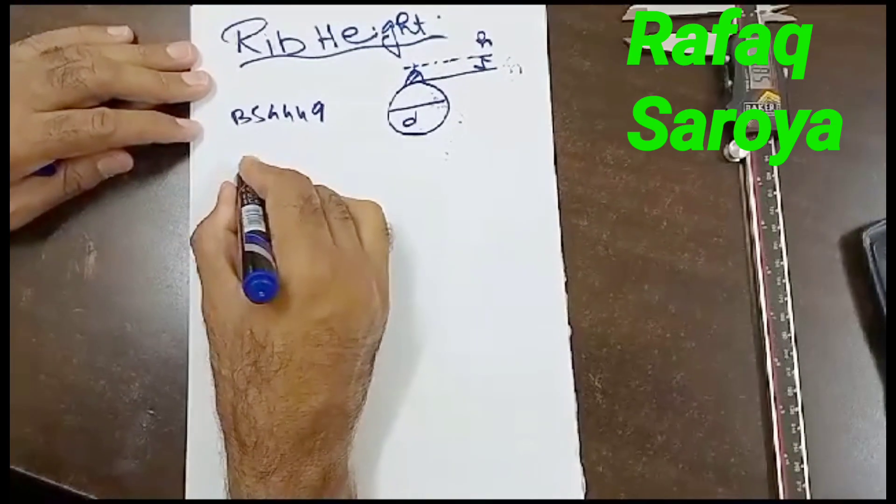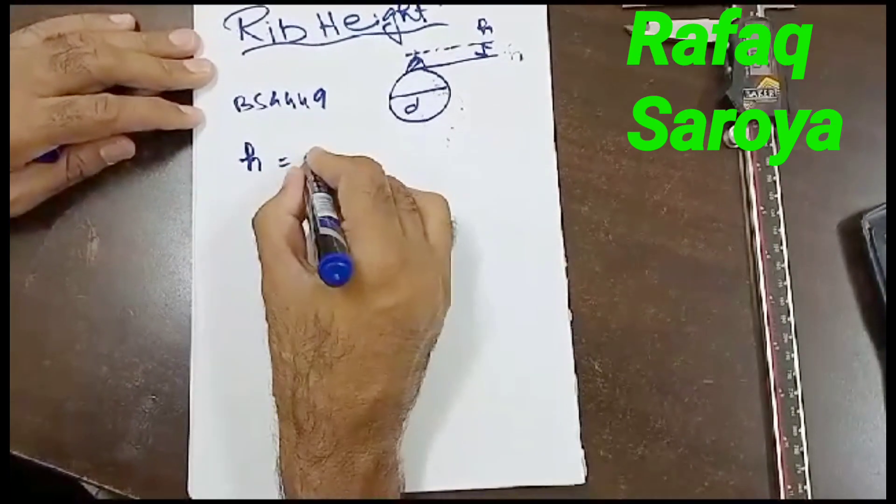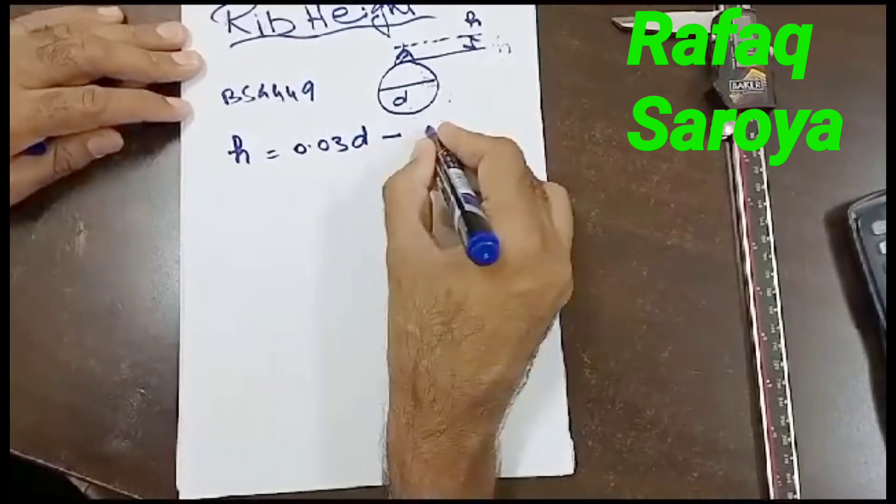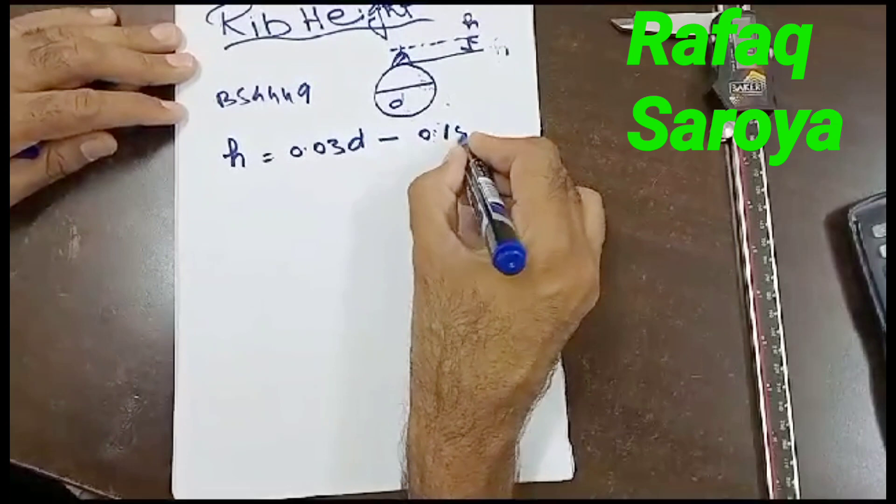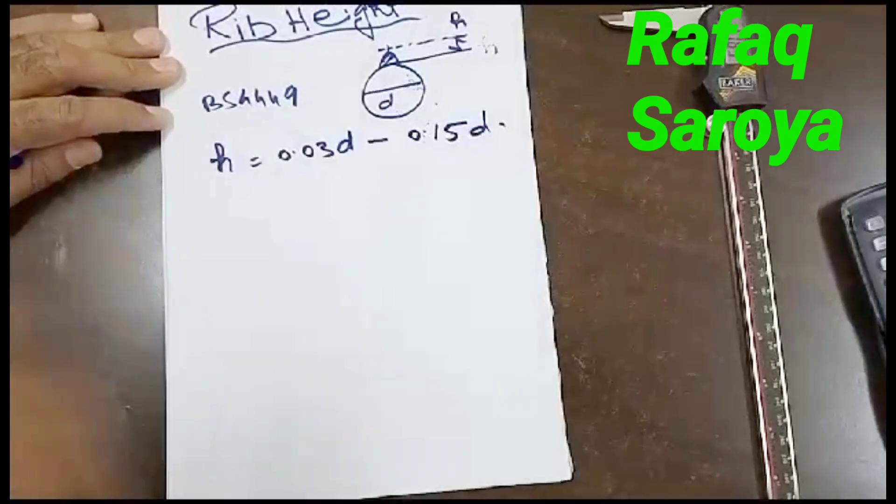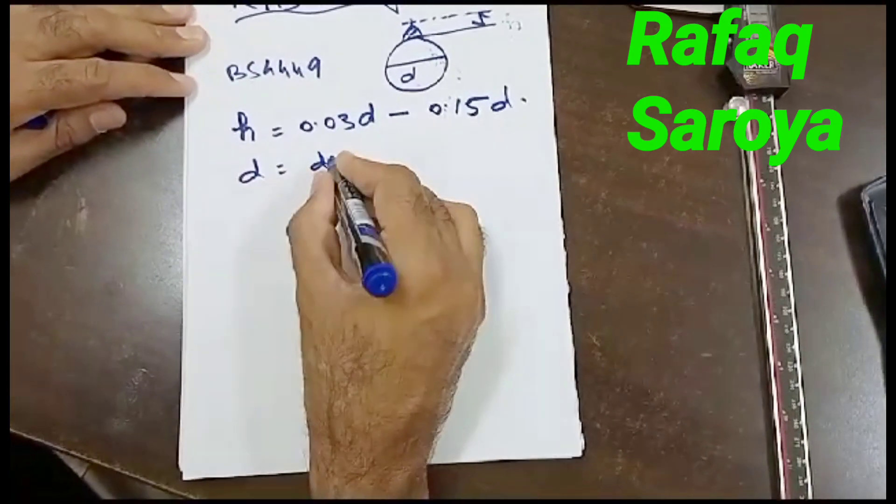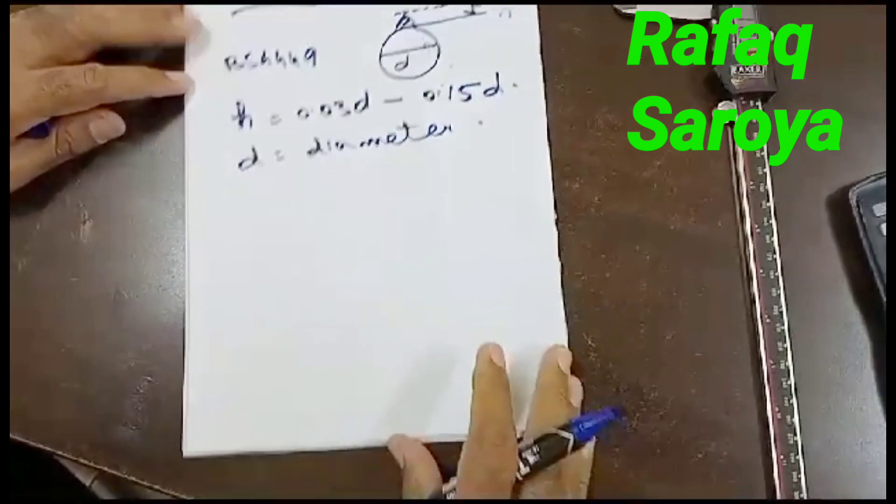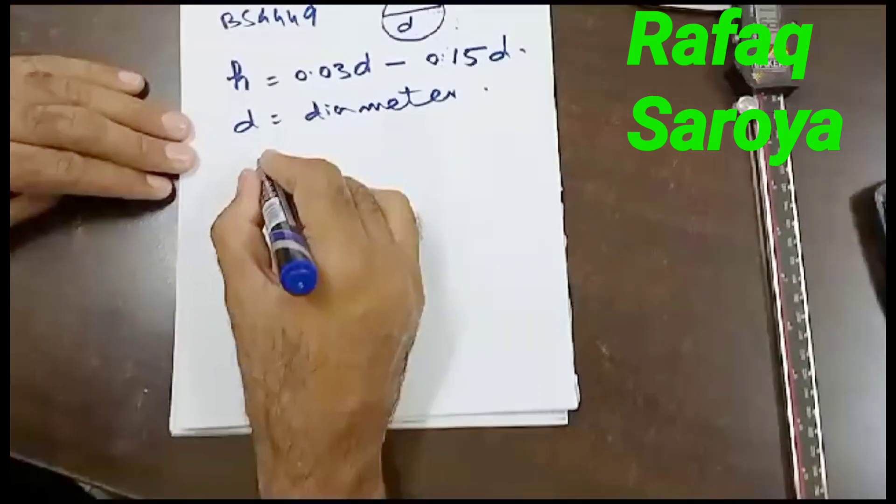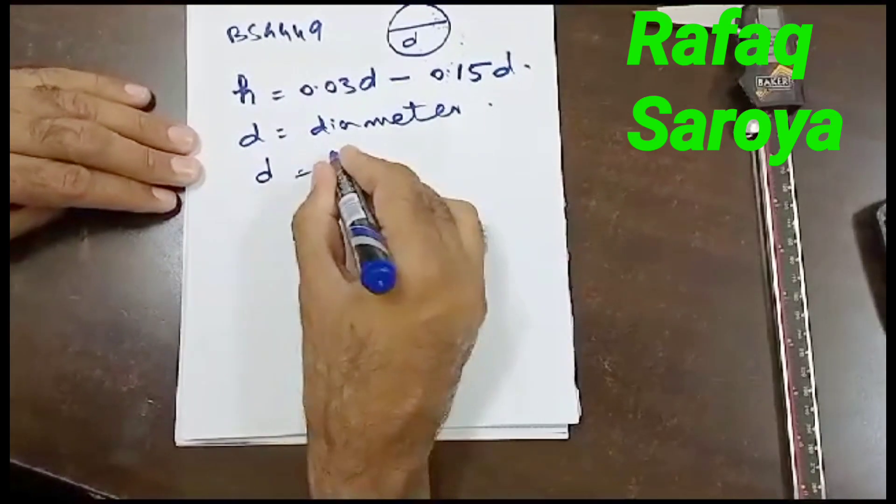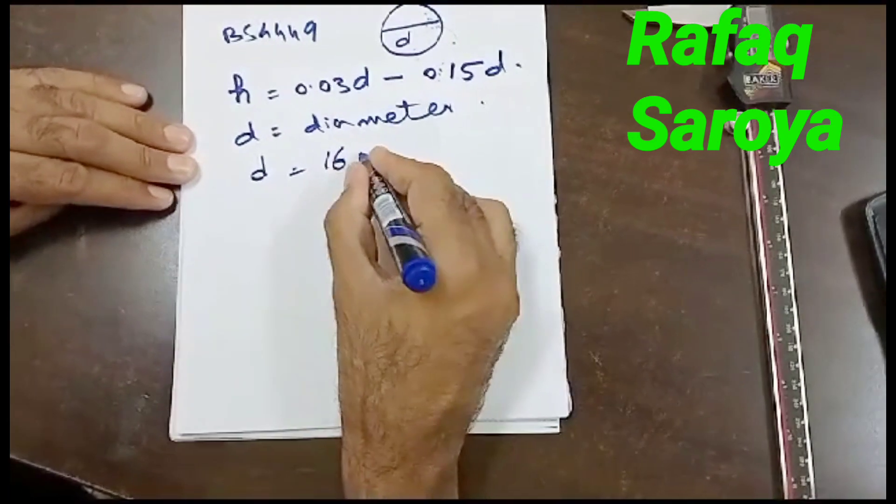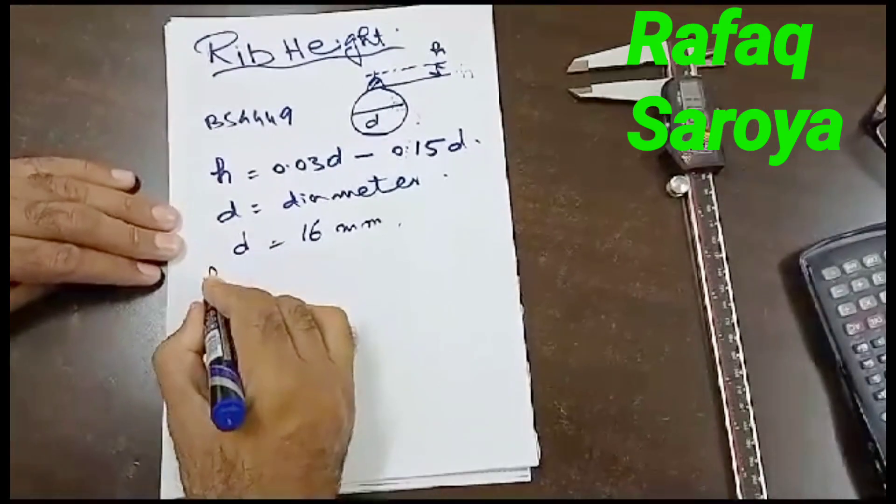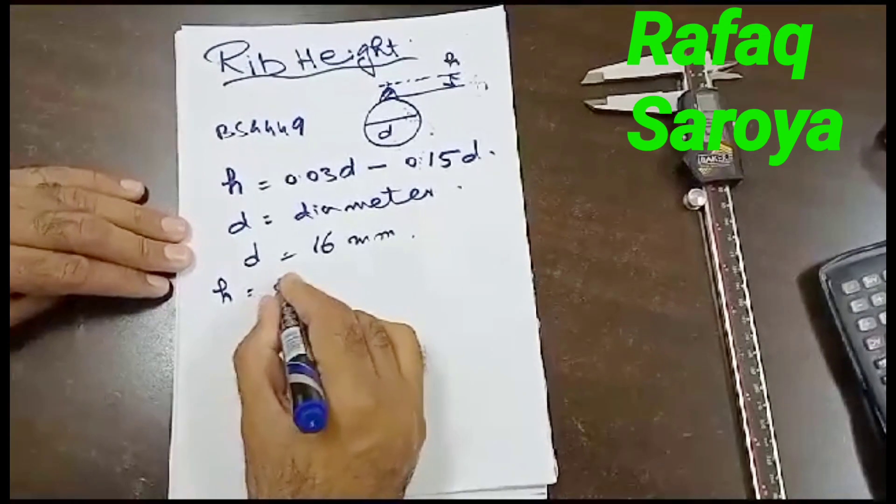0.03D minus 0.15D. D, I have already told you, is the diameter. Let me give you one example. Suppose I have this diameter 16mm. If I put this value of 16mm, then let me check what value comes out to be.